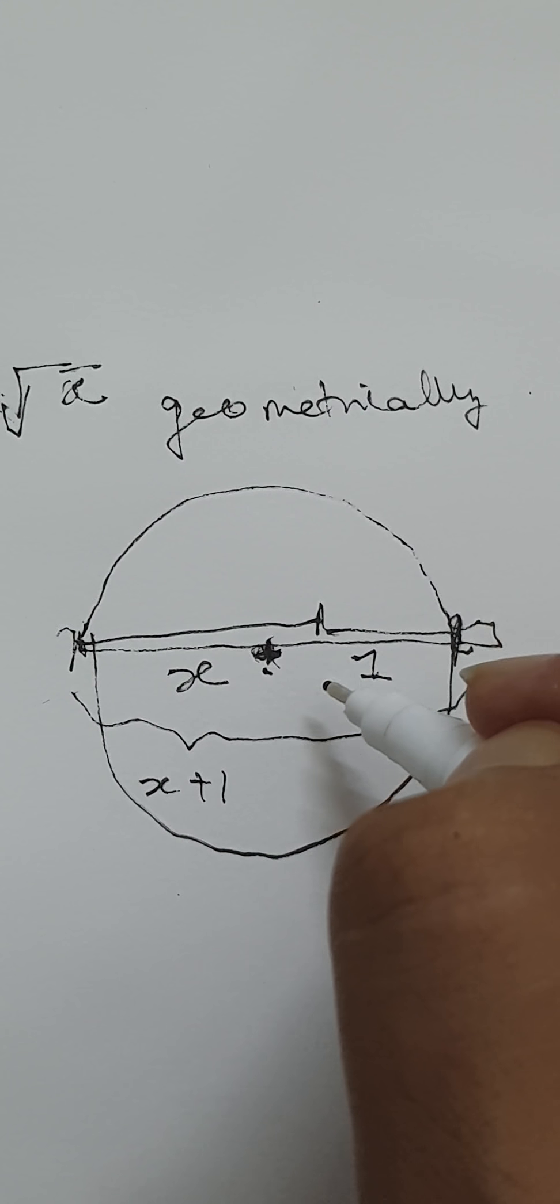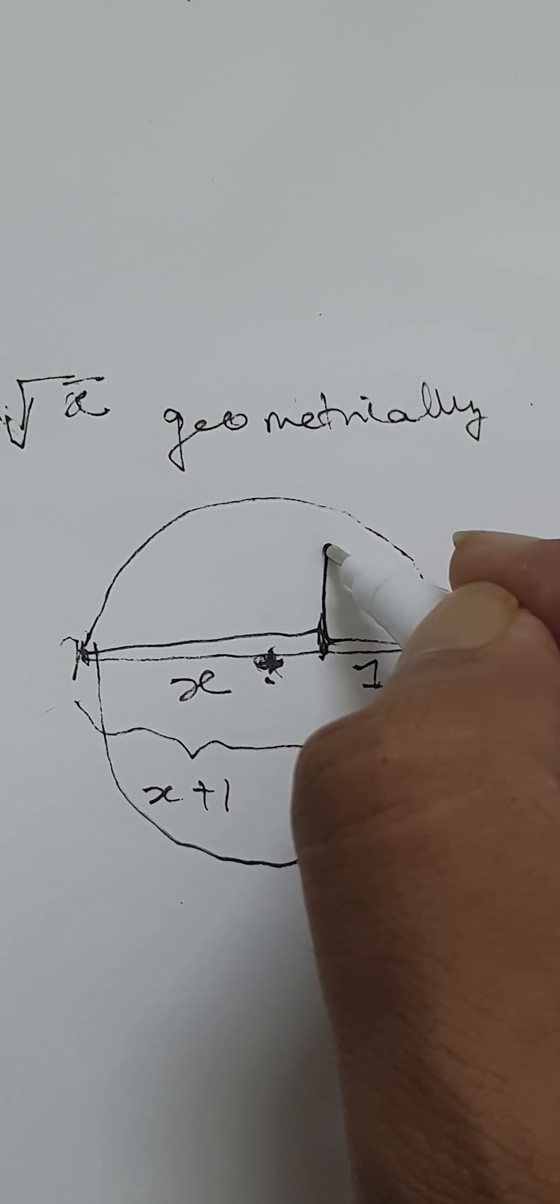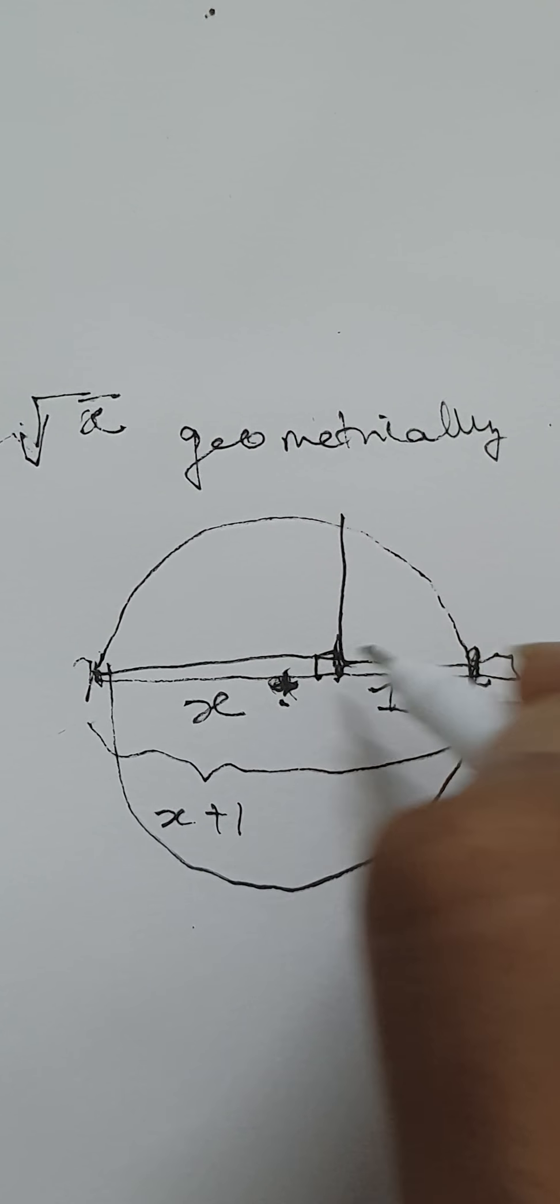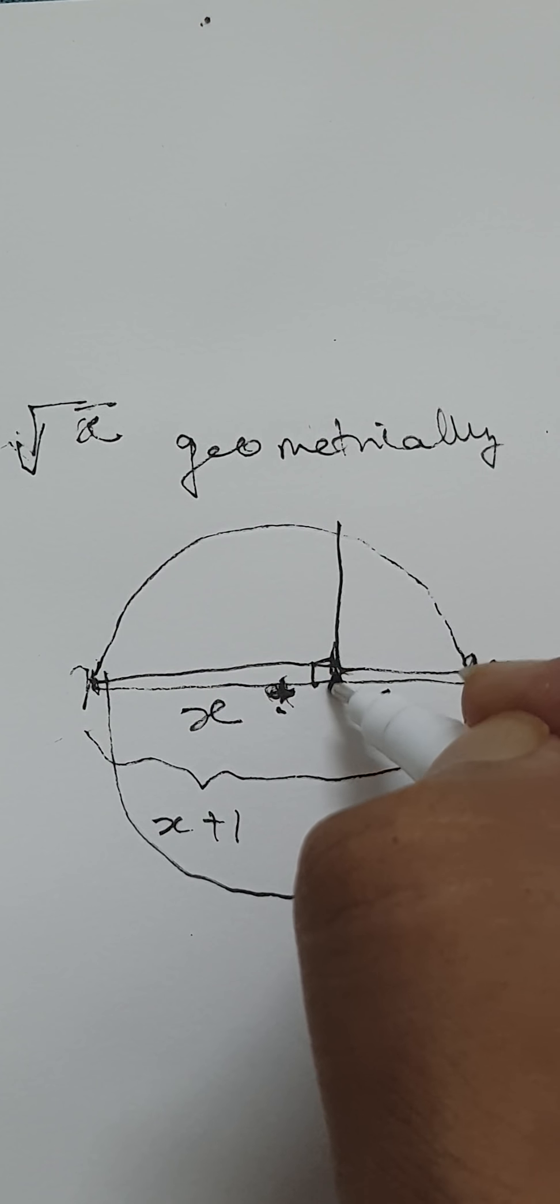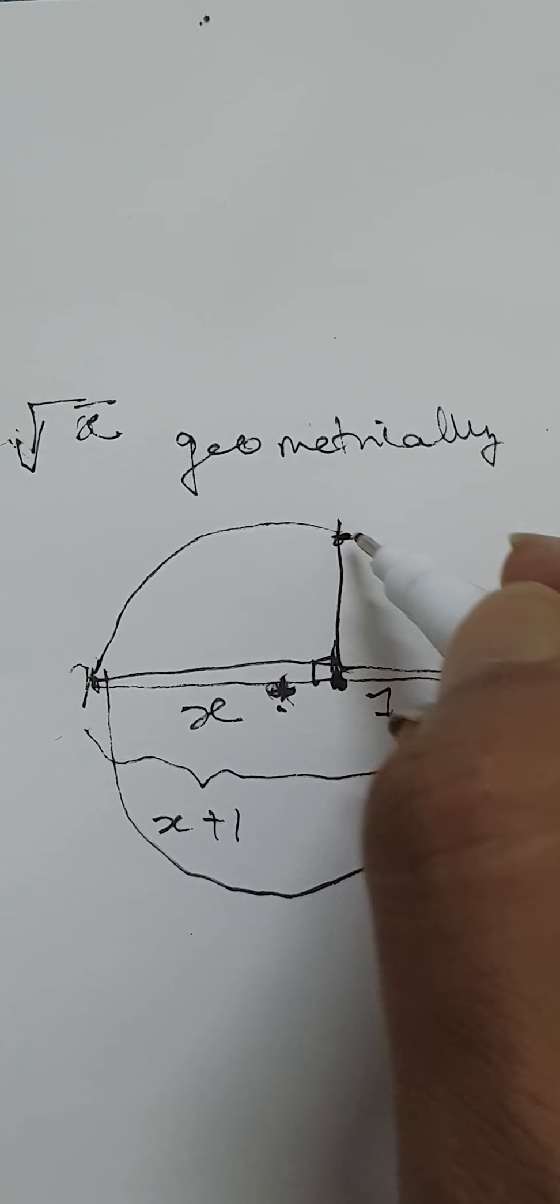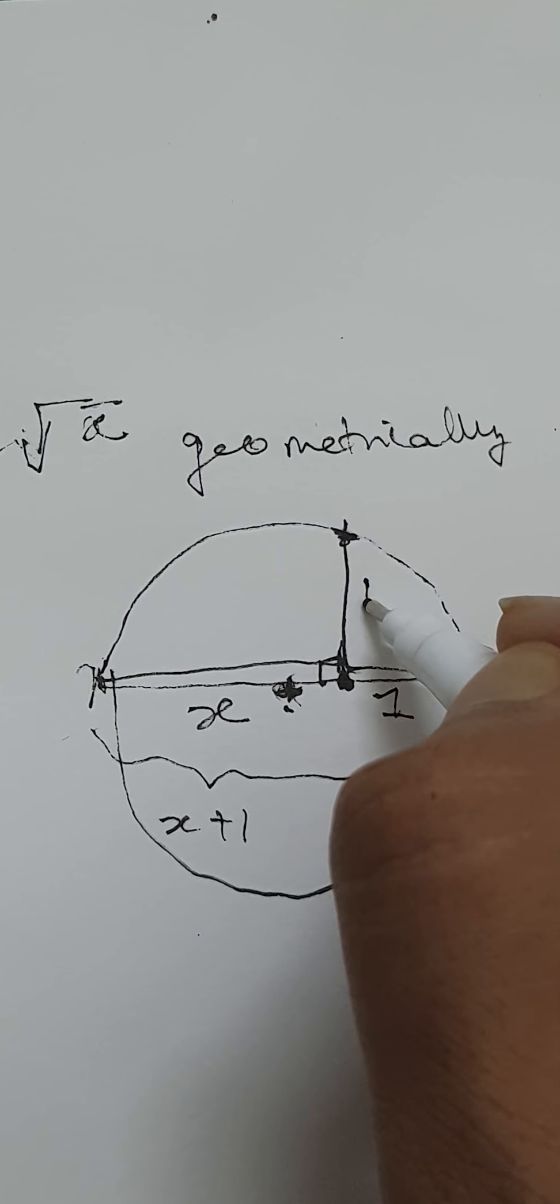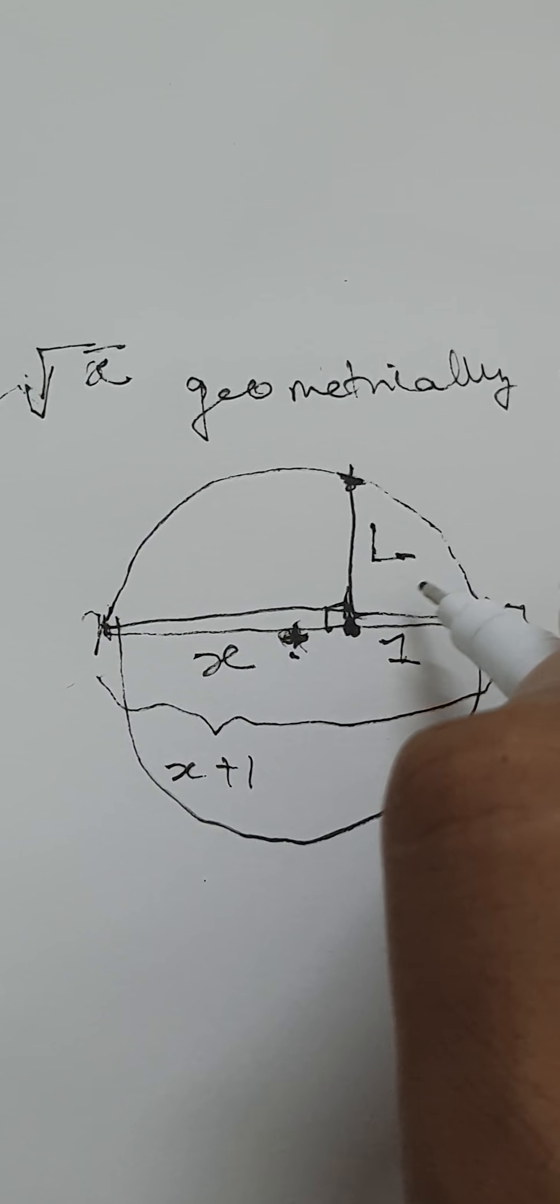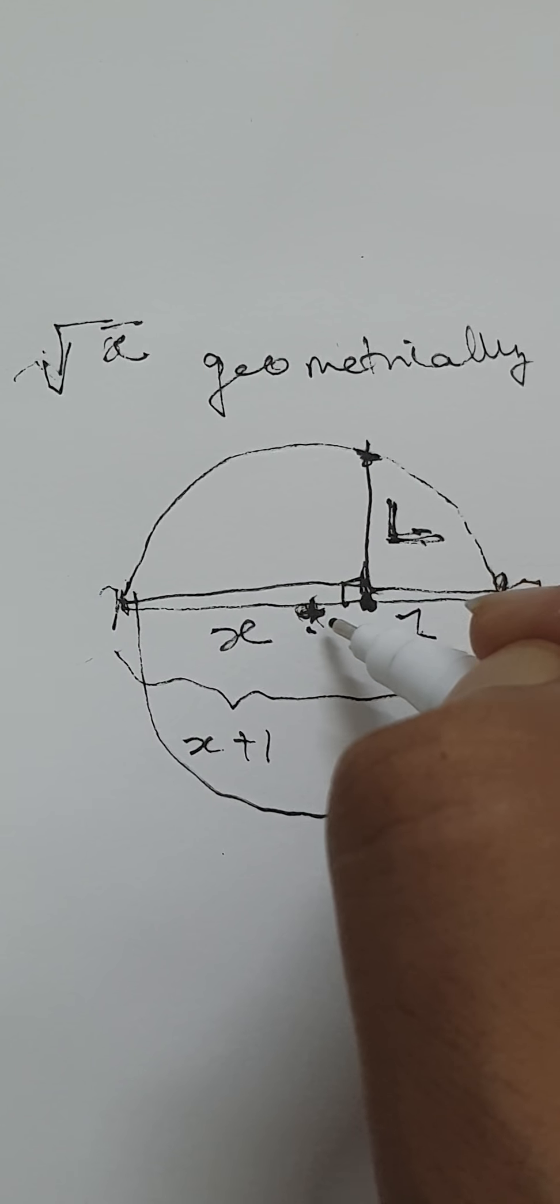Now if you draw a perpendicular line from this point to the circumference, and let's say this is defined by length l, then l is the length that we want to calculate here.